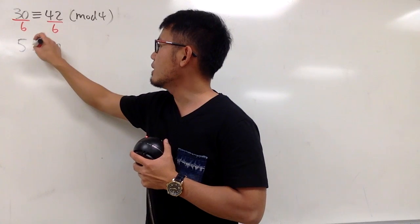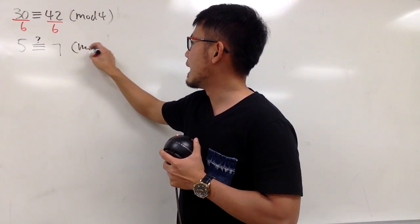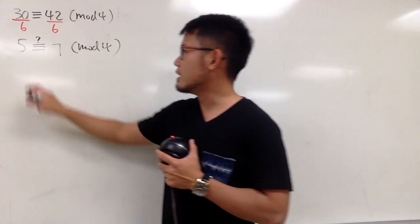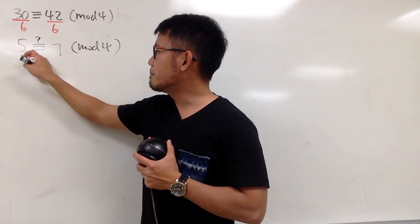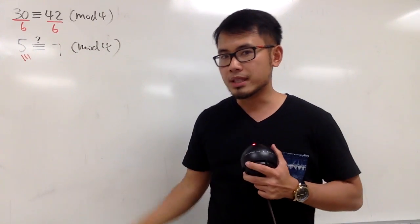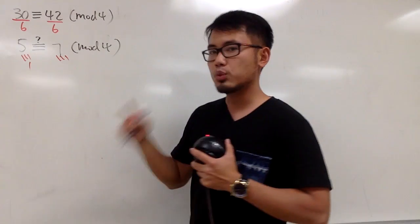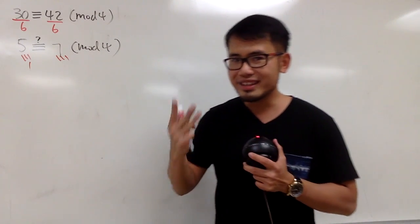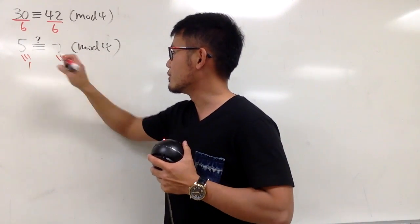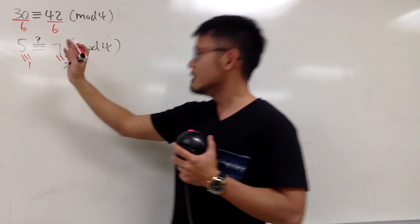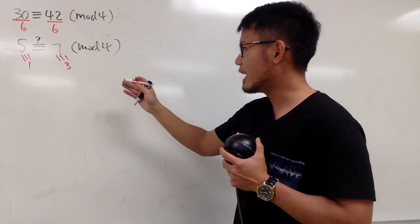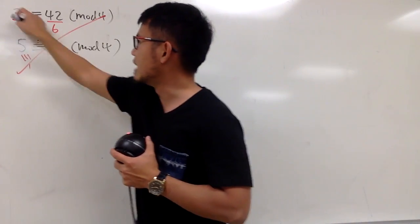But now, are they still congruent to mod 4? Well, let's see. 5 divided by 4 is 1, which is a remainder of 1. And then 7 divided by 4 is 1, which is a remainder of 3. So this is actually congruent to 3. And you see, the left-hand side we have 1, the right-hand side we have 3. Of course, this is not true anymore.